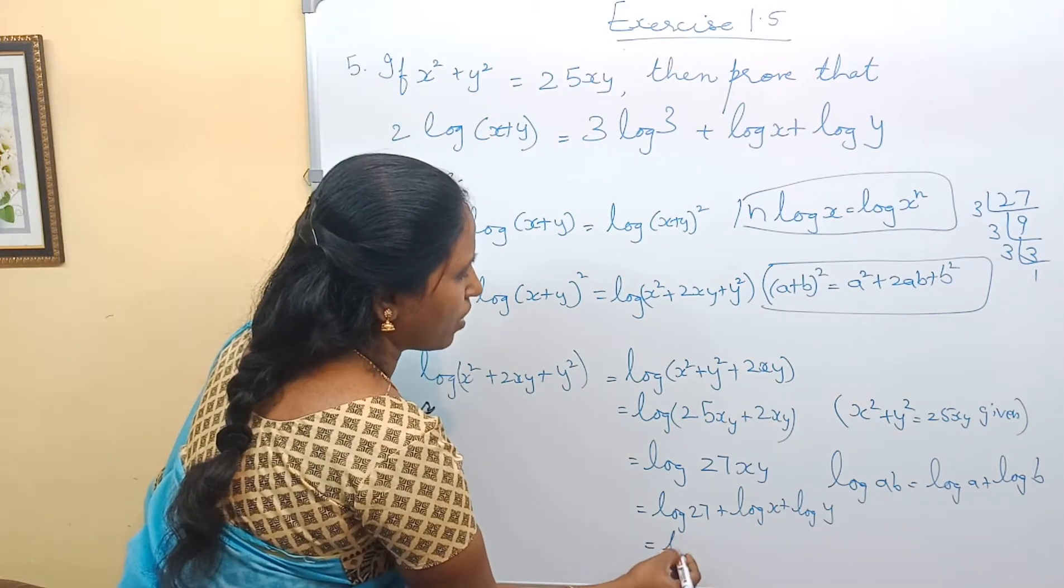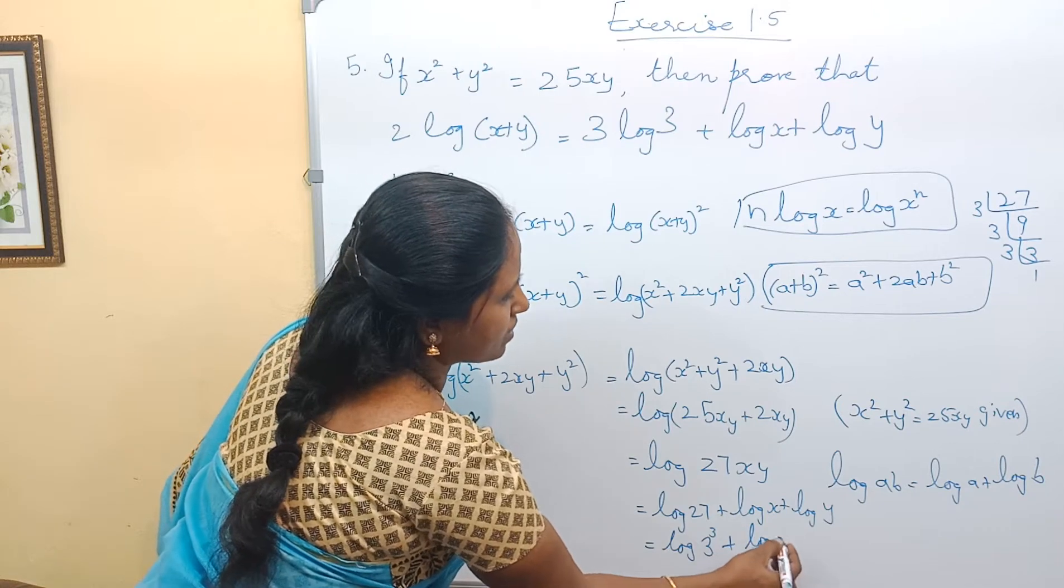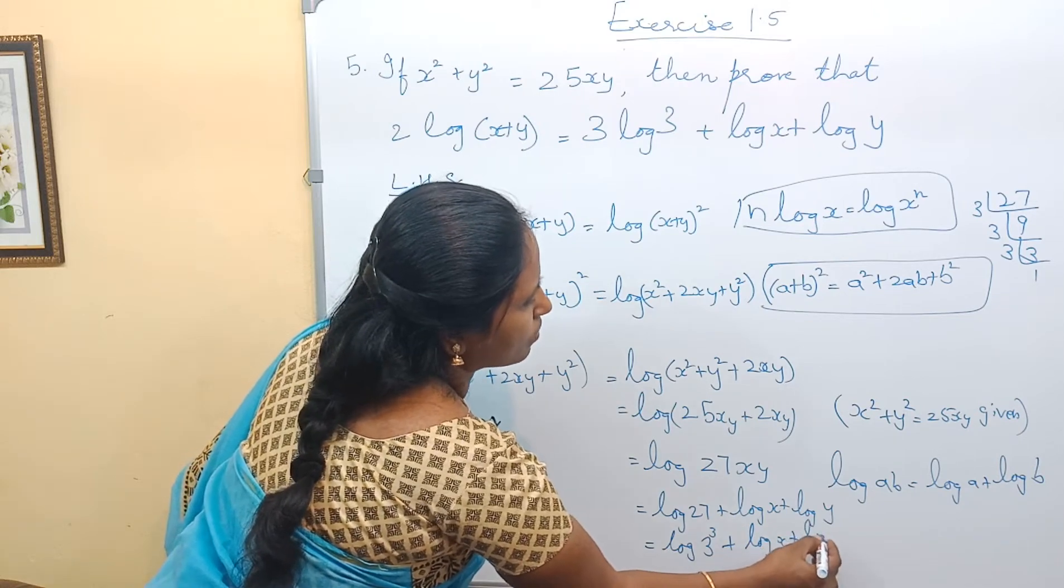So how do we write this? Log 27 is nothing but log 3³. Then log x + log y.